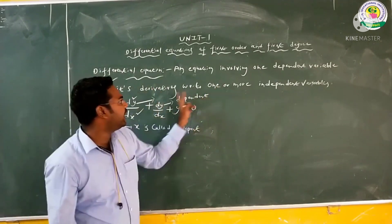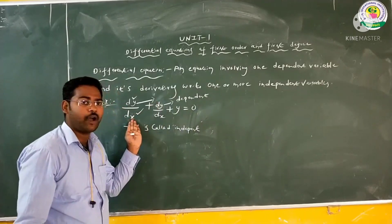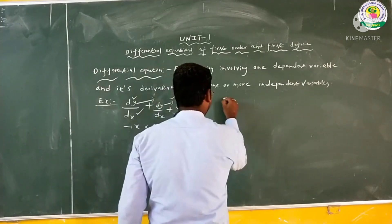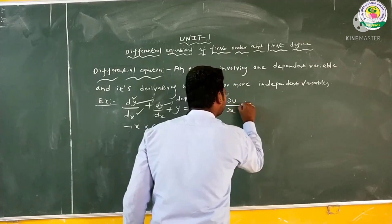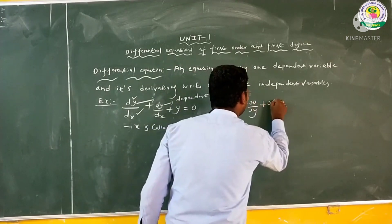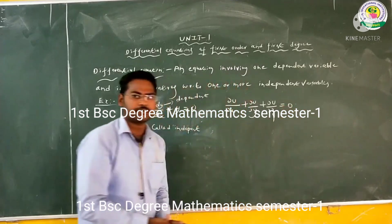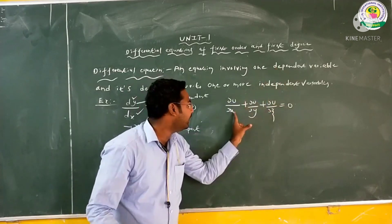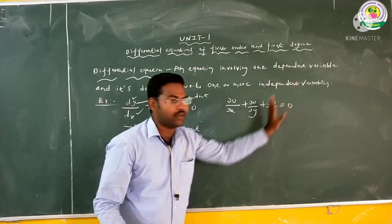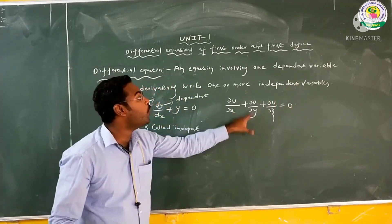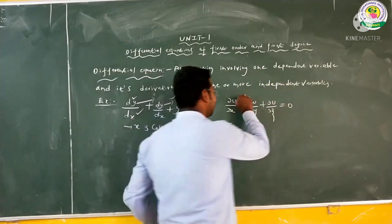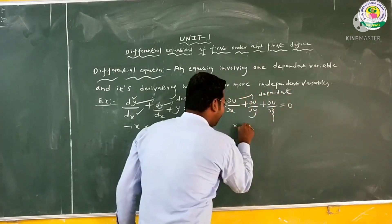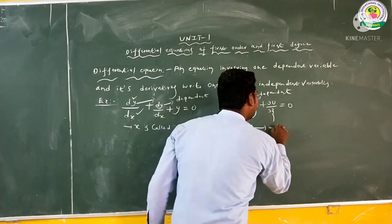Its derivatives can be with respect to one or more independent variables. For example, in Example 2: ∂u/∂x + ∂u/∂y + ∂u/∂z = 0. Here u is called the dependent variable, and x, y, z are independent variables. We observe two or more independent variables.